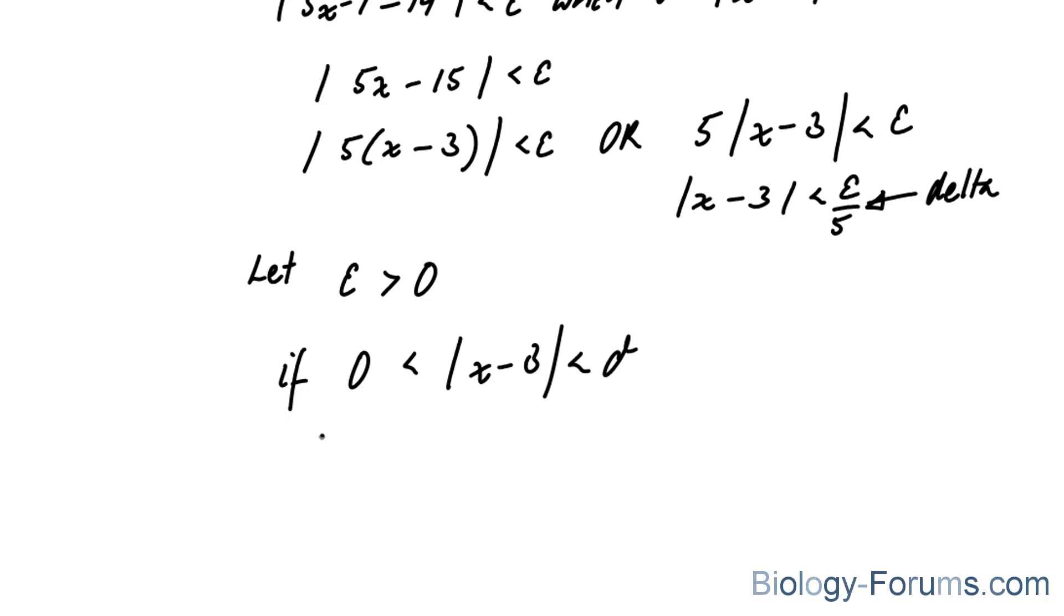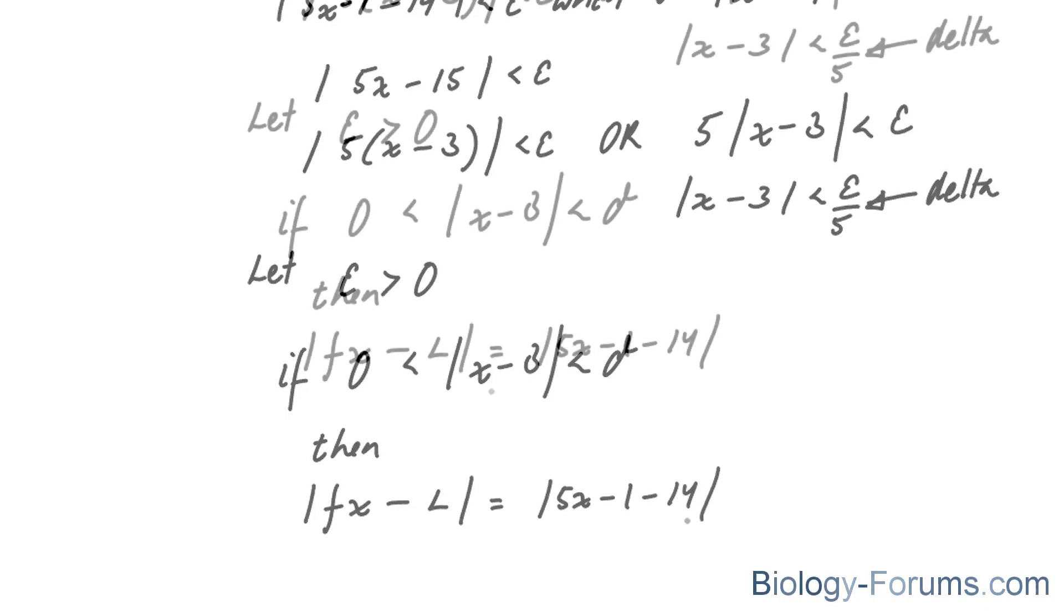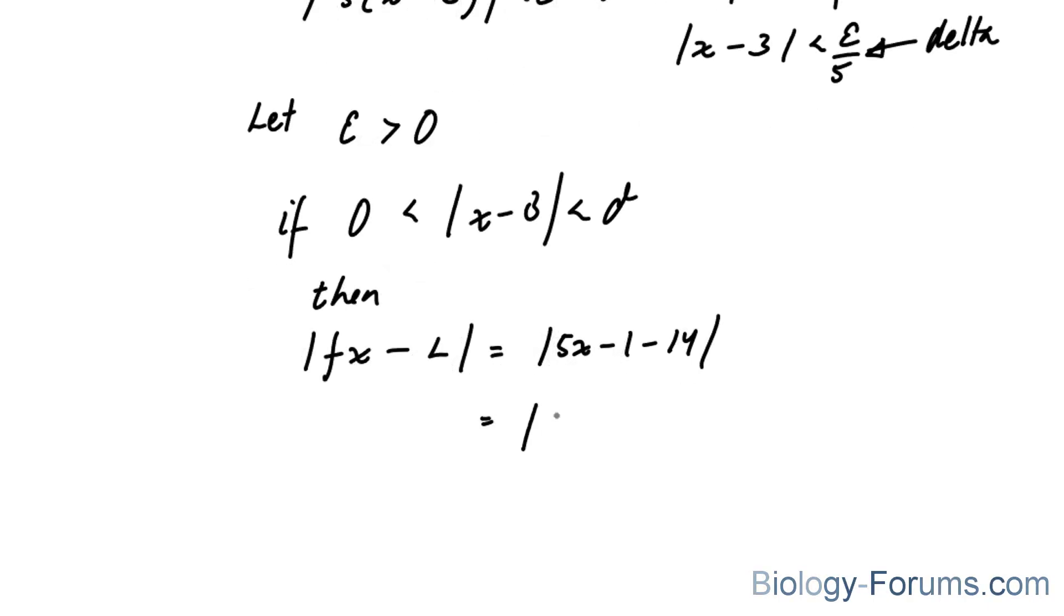then the absolute value of f at x minus L is equal to the absolute value of 5x minus 1 minus 14. And this can be simplified to the absolute value of 5x minus 15, which equals 5 times the absolute value of x minus 3. And remember, we set this equal to our delta.